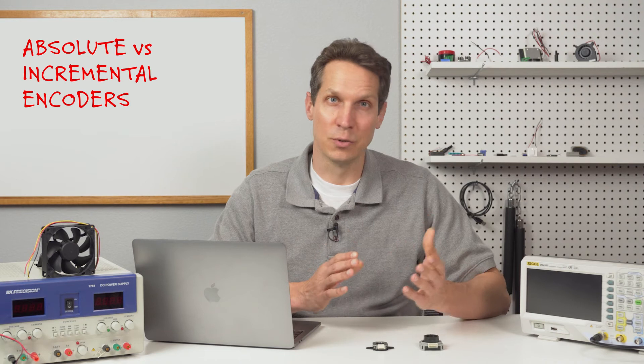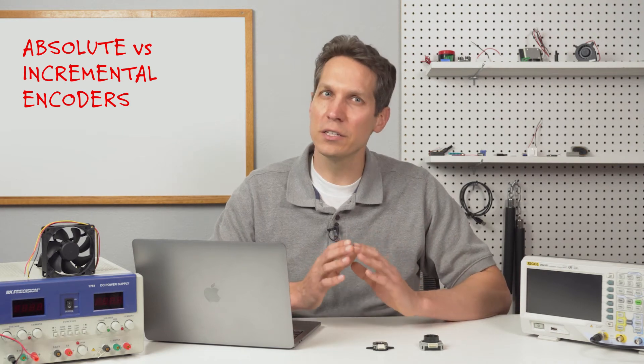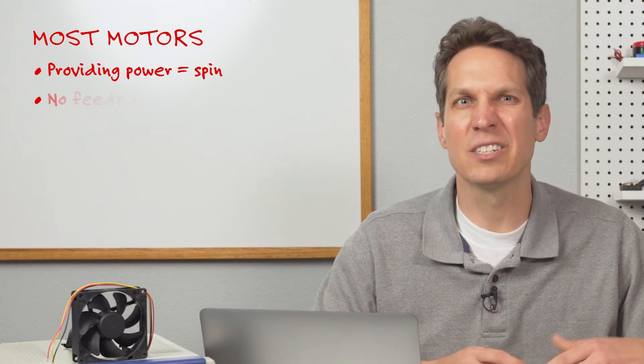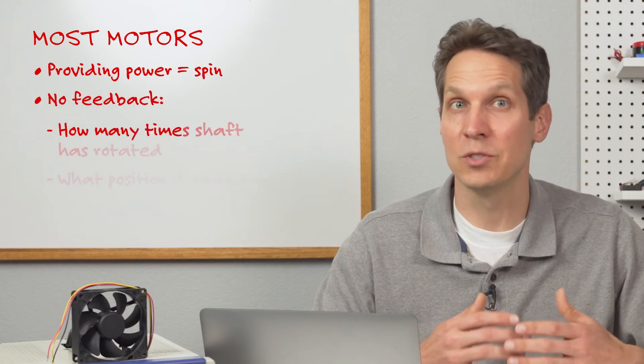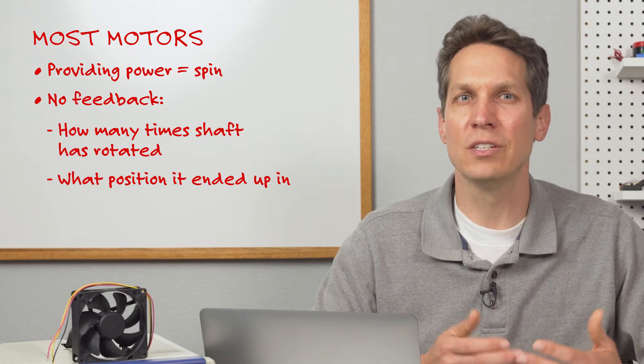Before we jump into the differences between the two types of encoders, let's quickly review what an encoder is. With most motors, you provide power and it spins, but there is no feedback to let you know how many times the shaft has rotated, or what position it ended up in.